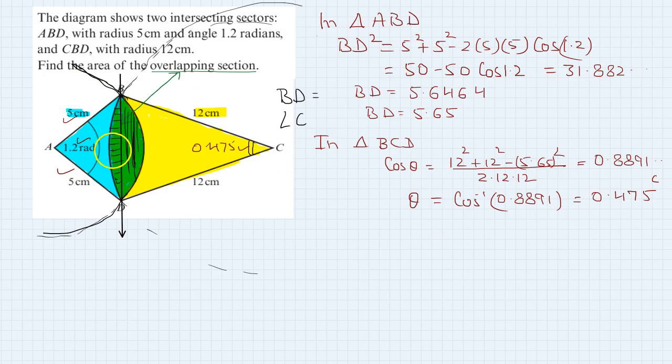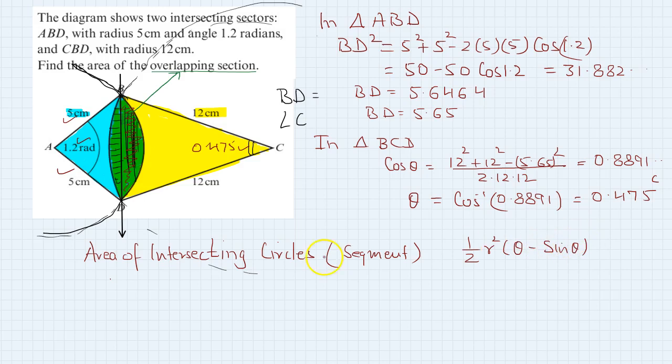This area is a segment of this circle. The area of a segment is half r squared times theta minus sine theta.